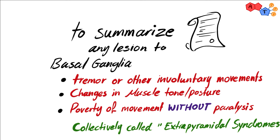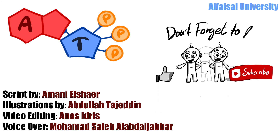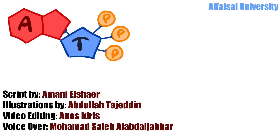The basal ganglia is important for voluntary movements and postural adjustments. It receives cortical input and provides feedback to the cortex to modulate our movements. Hope you enjoyed - please give us your feedback, and don't forget to like and subscribe to get our new videos and explanations.